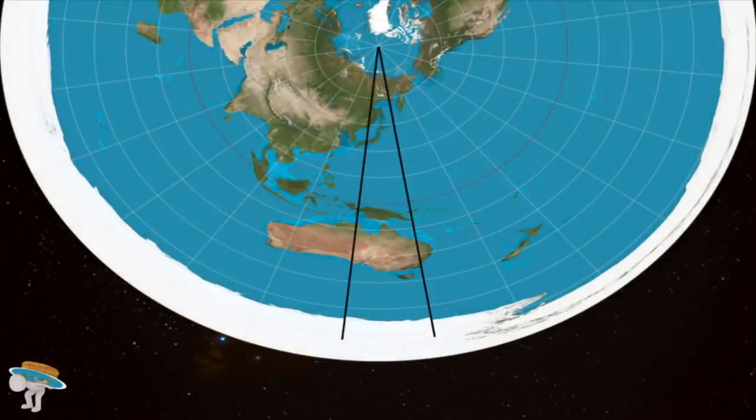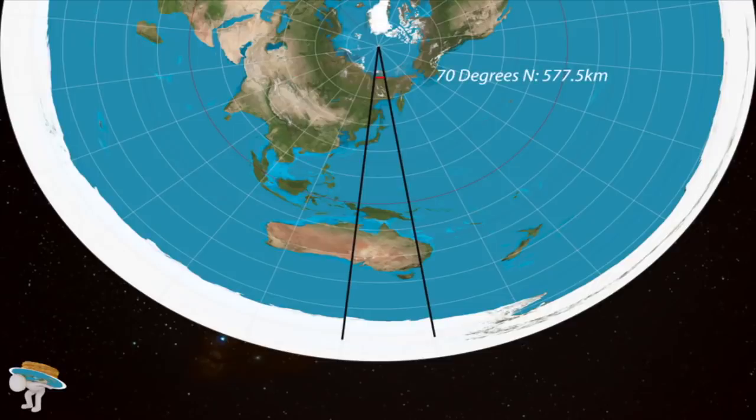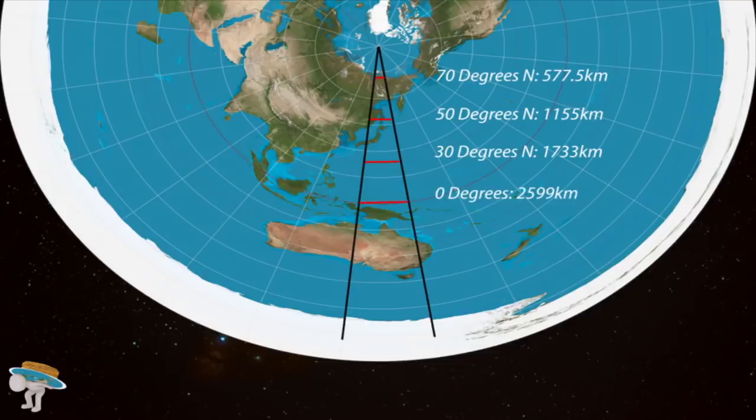And here's what the math says about the AE map. Viewing the AE map in 15 degree segments, because this is the one hour travel time of the sun, the distances between zero longitude and 15 west are at 70 degrees north, 577 kilometers, 50 degrees north, 1,155 kilometers, 30 degrees north, 1,733 kilometers, and at the equator, zero, 2,599 kilometers. These measurements were based off of a 15 degree triangle and are indisputable.